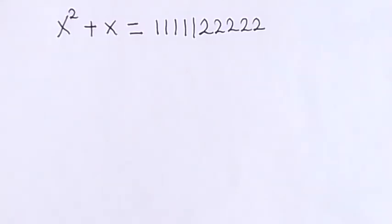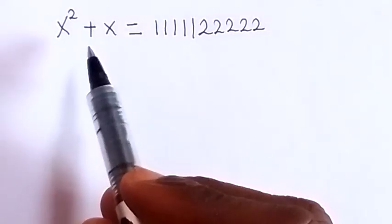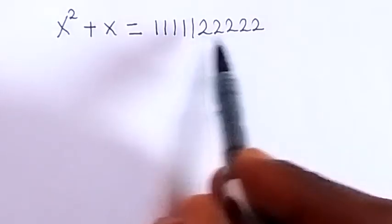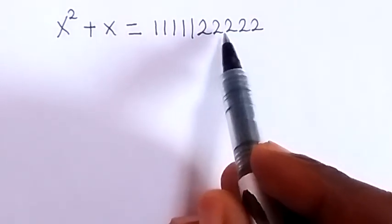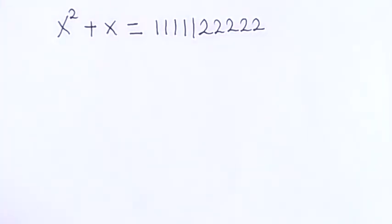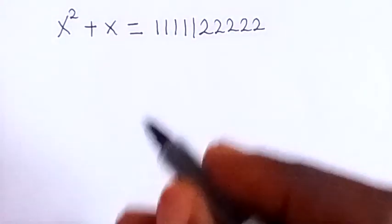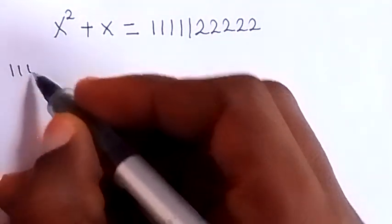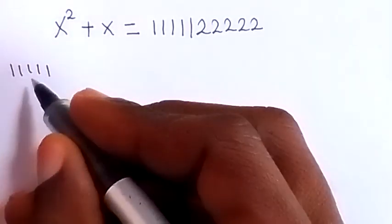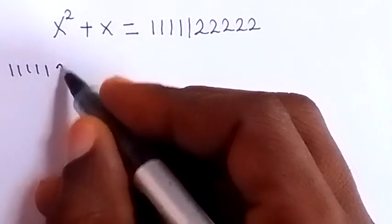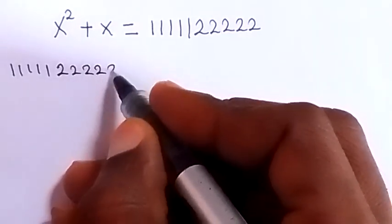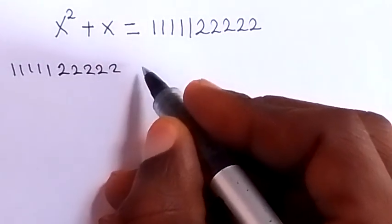Today we'll solve this problem: x squared plus x equals 11111 22222. On the right-hand side we have five 1s — that is 11111 — and five 2s — that is 22222.